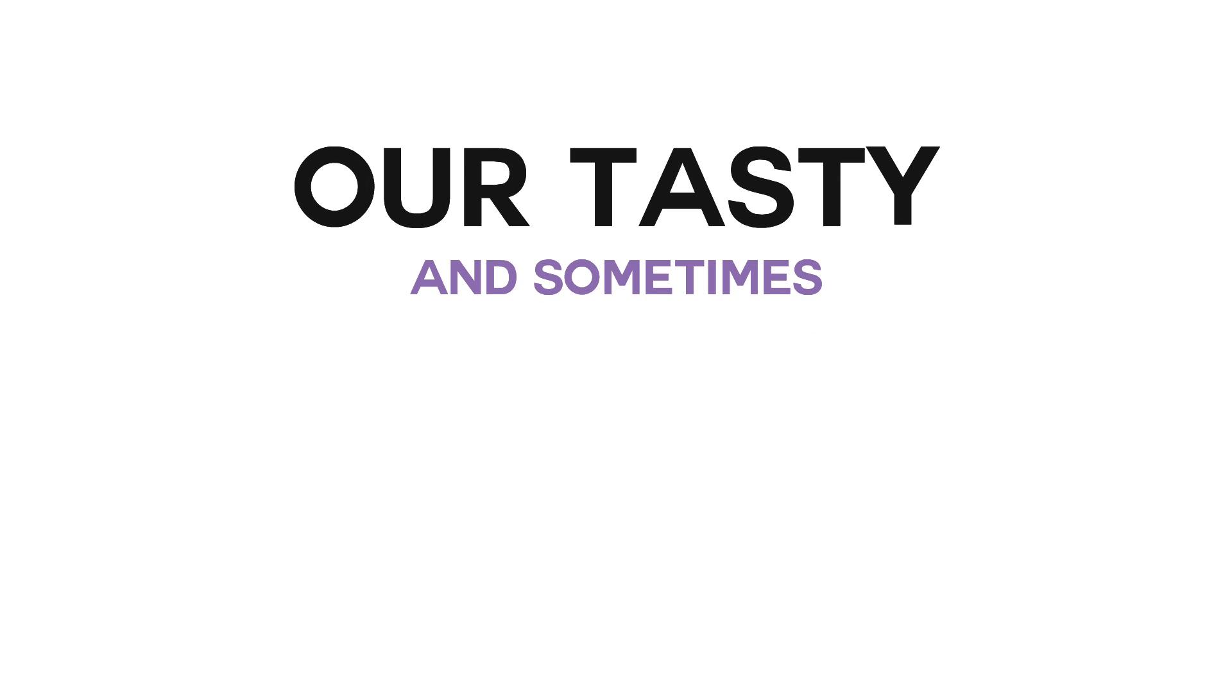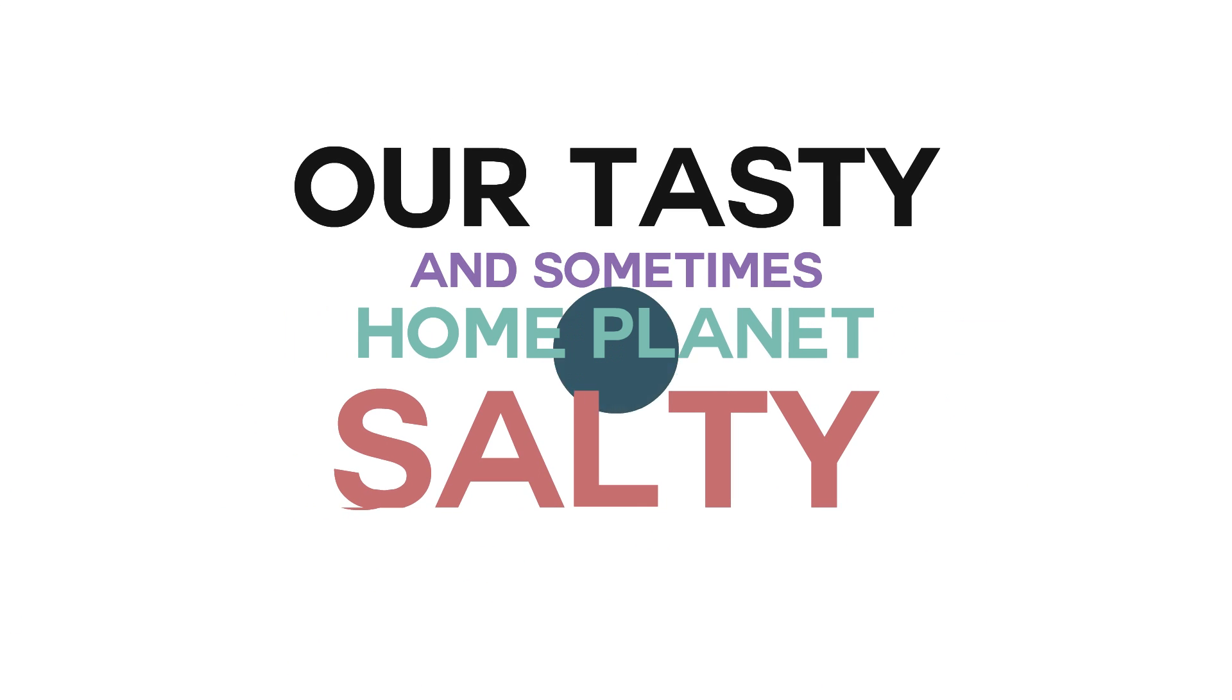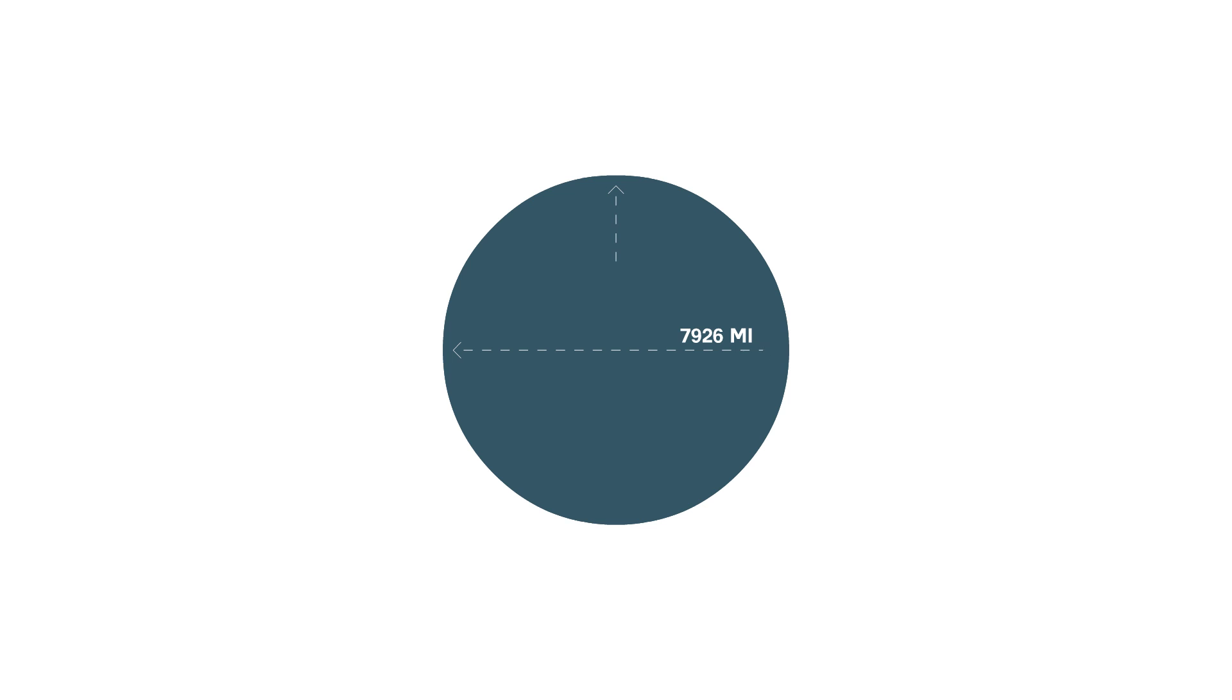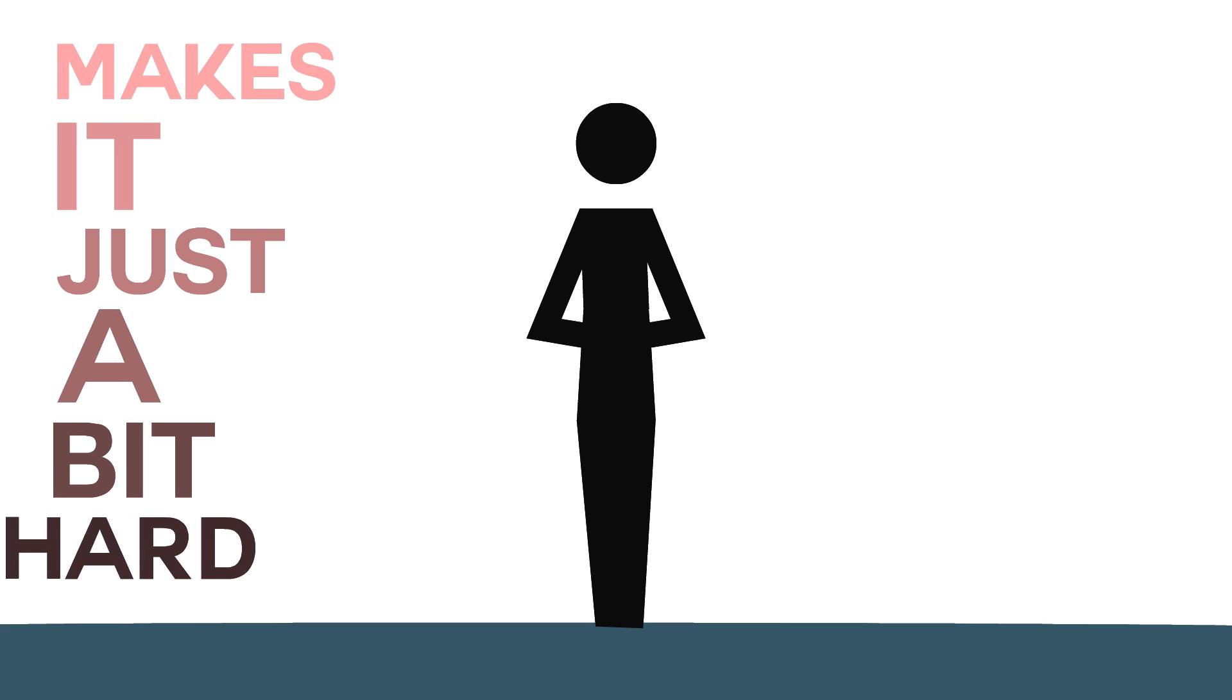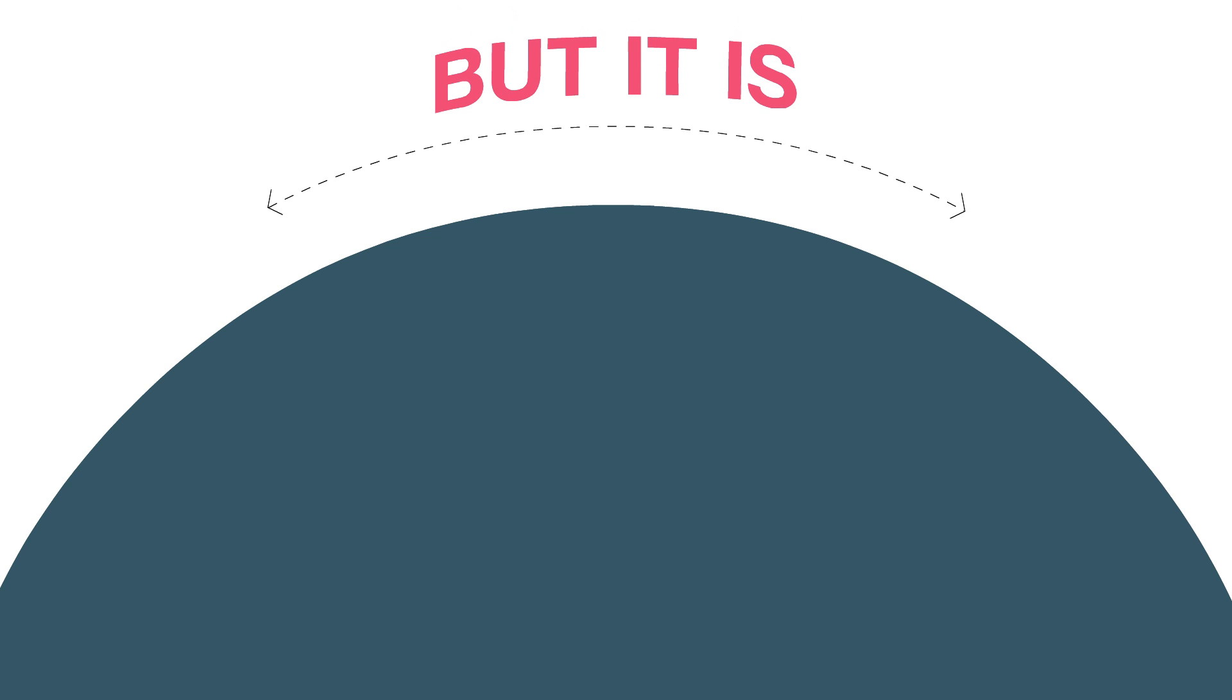Our tasty and sometimes salty home planet is just about a perfect sphere. And living on this spherical rock that is about 7 million times taller than you are makes it just a bit hard to understand that it's ever even curving away. But it is.